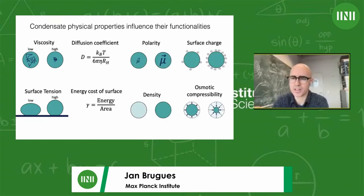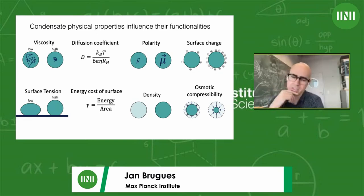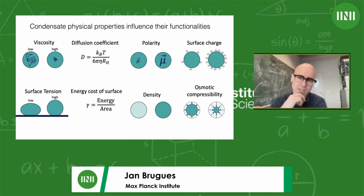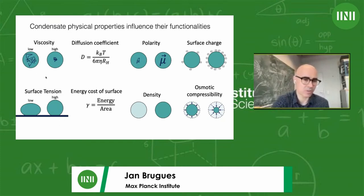There are other physical properties that have been largely unexplored, like effective polarity, surface charges, changes in density, and compressibility. A challenge in the field is how to characterize and measure these properties. One of the big challenges is also to figure out the composition of these droplets, because that would change all these parameters. For the first part of the talk, I'll focus on condensates interacting with surfaces.